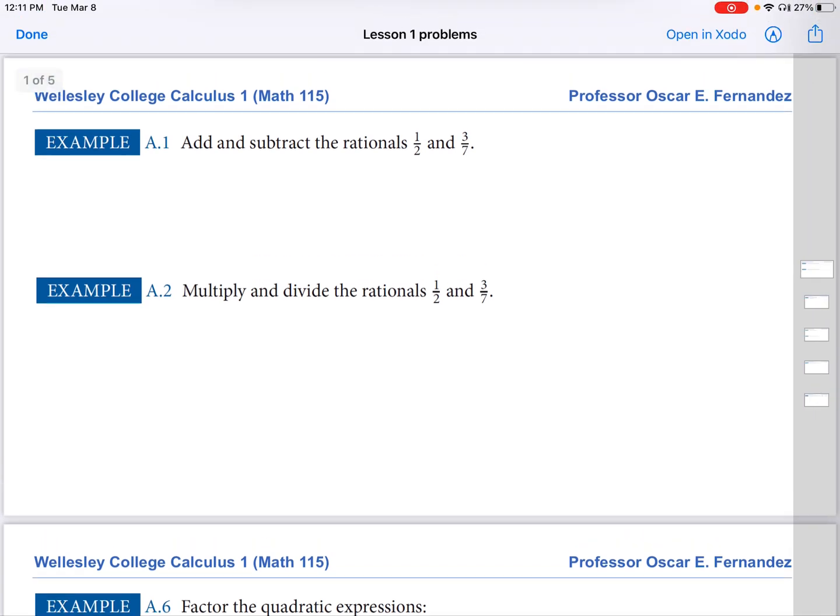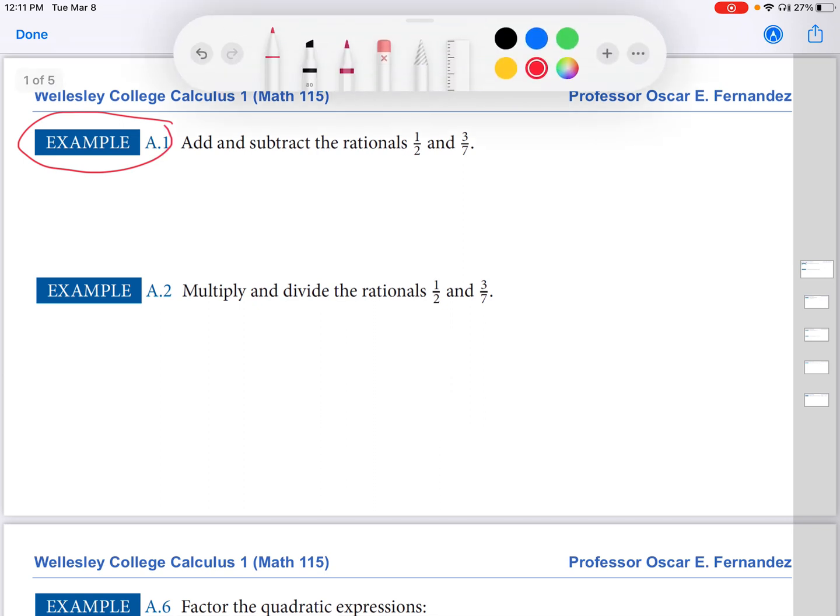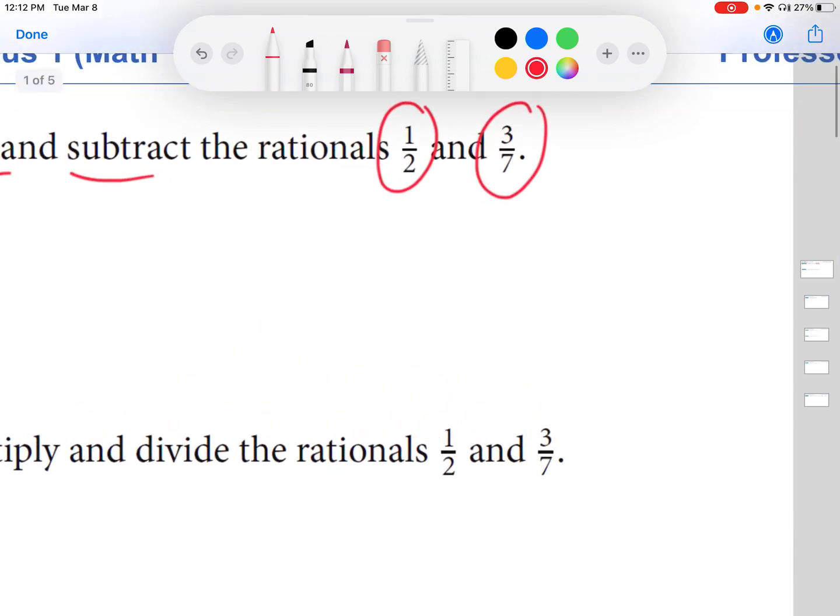Hi, this is Professor Fernandez and in this video we are going to talk about adding, subtracting, multiplying, and dividing fractions. So let's look at these two examples here. These come from calculus simplified. This is example A1, so that's in the appendix, the first example. It says add and subtract the rational numbers one-half and three-sevenths. I'm going to zoom in here a little bit.